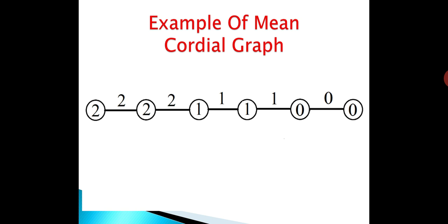For the third edge, (1+1)/2 = 1, and ⌈1⌉ = 1, so the third edge is labeled 1. For the fourth edge, (1+0)/2 = 0.5, and ⌈0.5⌉ = 1, so the fourth edge is labeled 1. For the fifth edge, (0+0)/2 = 0, and ⌈0⌉ = 0, so the fifth edge is labeled 0.